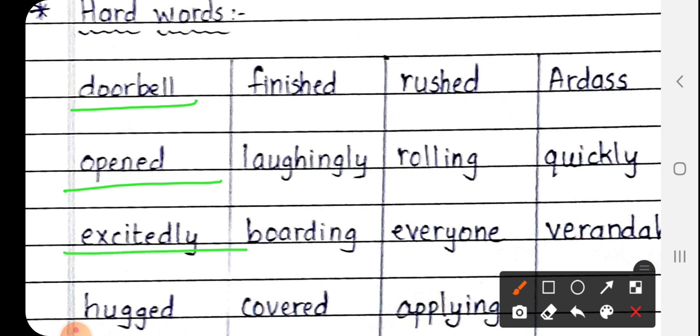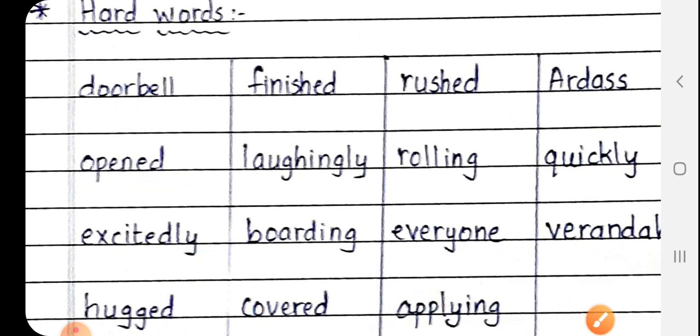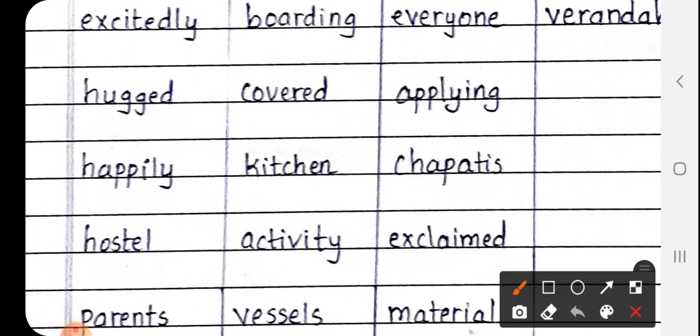Excitedly, E-X-C-I-T-E-D-L-Y. Excitedly means Utsasay. Next is Hugged, H-U-G-G-E-D. Hugged means Galei lagaya.